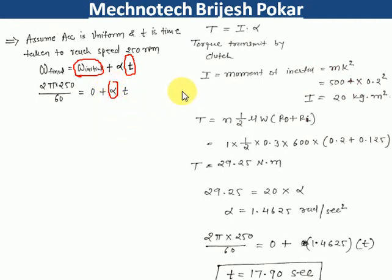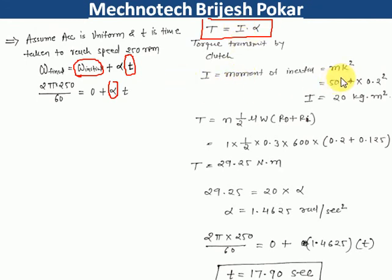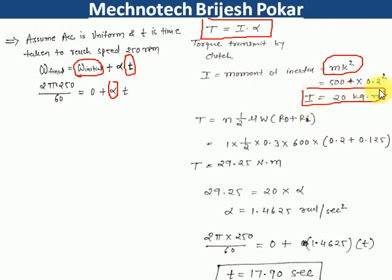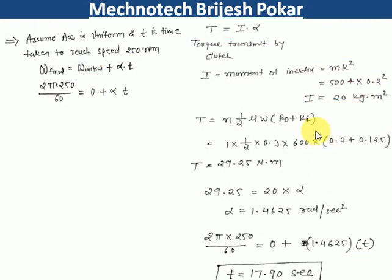The torque transmitted by the clutch is T = I·α, where I is the moment of inertia and α is the angular acceleration. The moment of inertia is I = m·k², where m is mass and k is the radius of gyration. So I = 500 × (0.2)² = 20 kg·m².